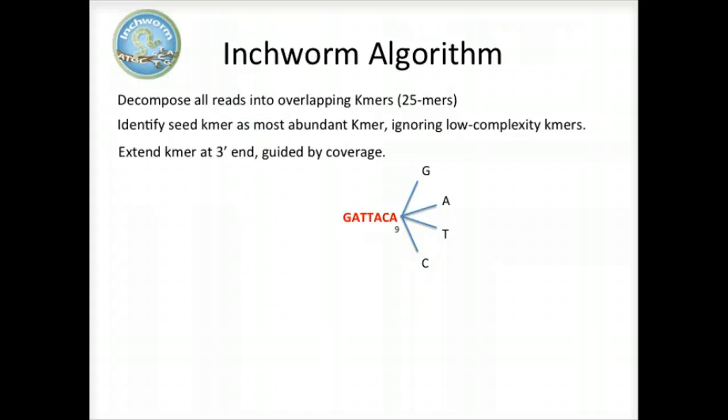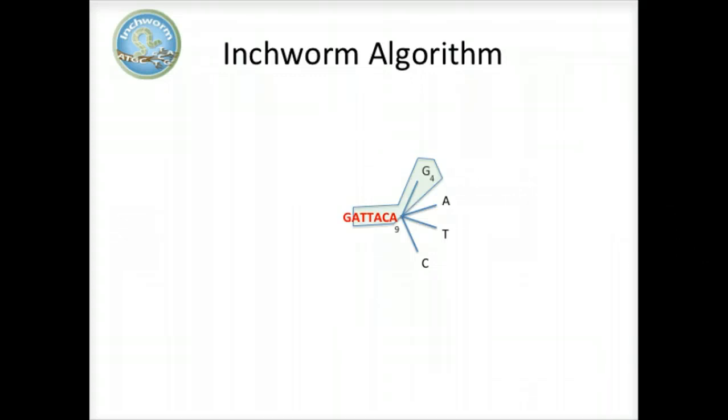For each extension, there are four possible k-mers, each ending with one of the four possible nucleotides. Each of the possible overlapping k-mers is looked up in the k-mer catalog to determine their frequency within the reads.